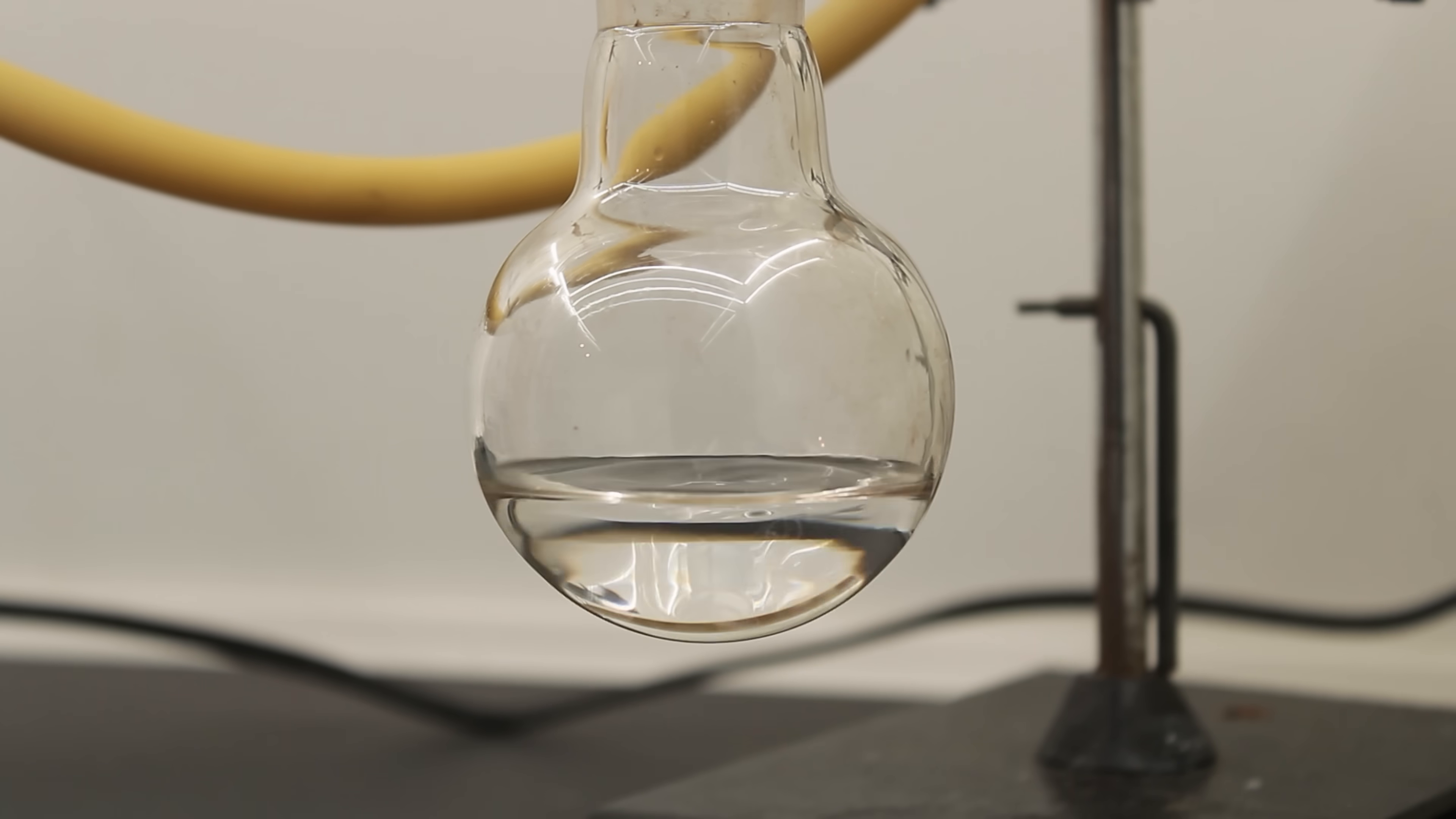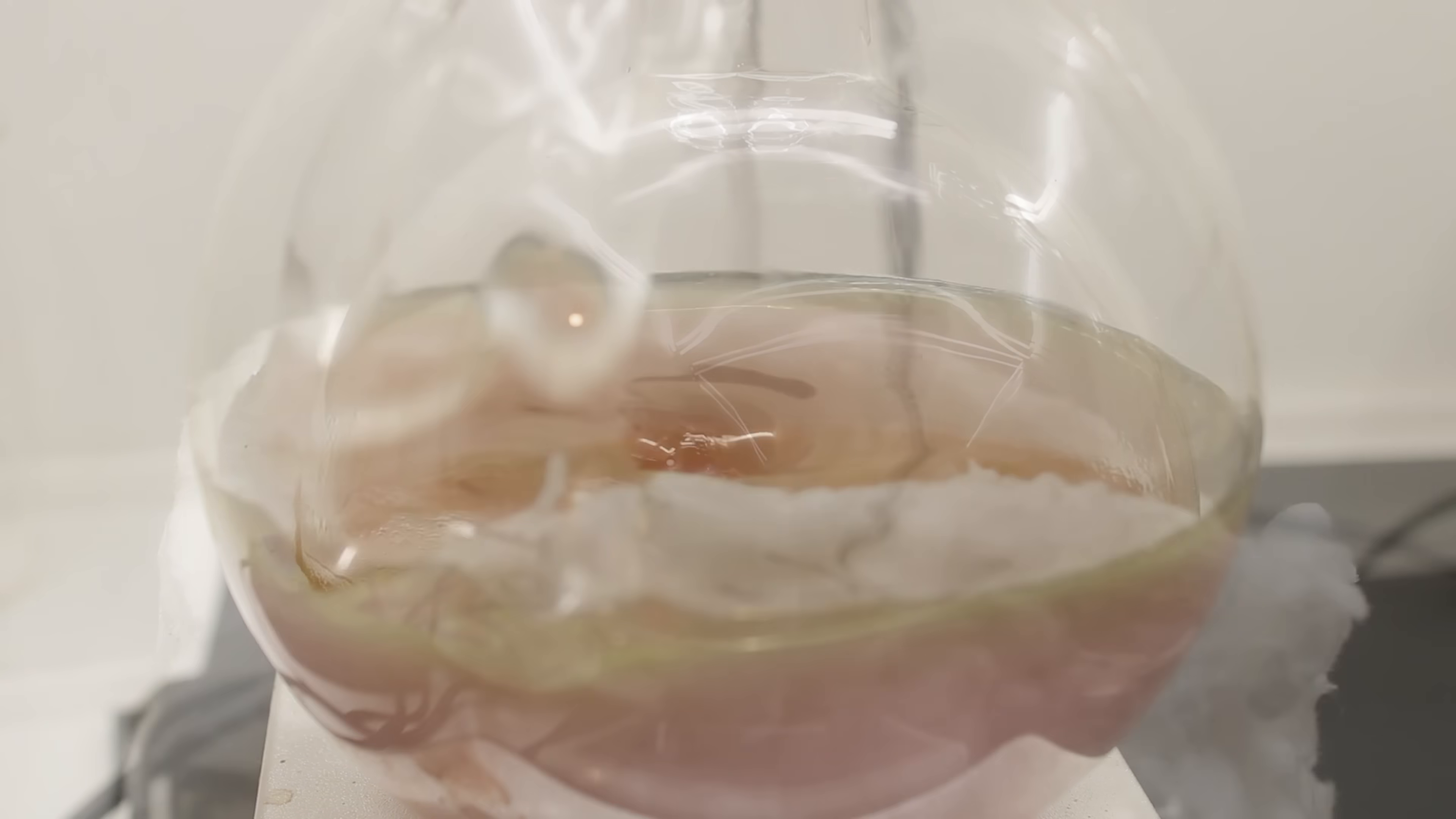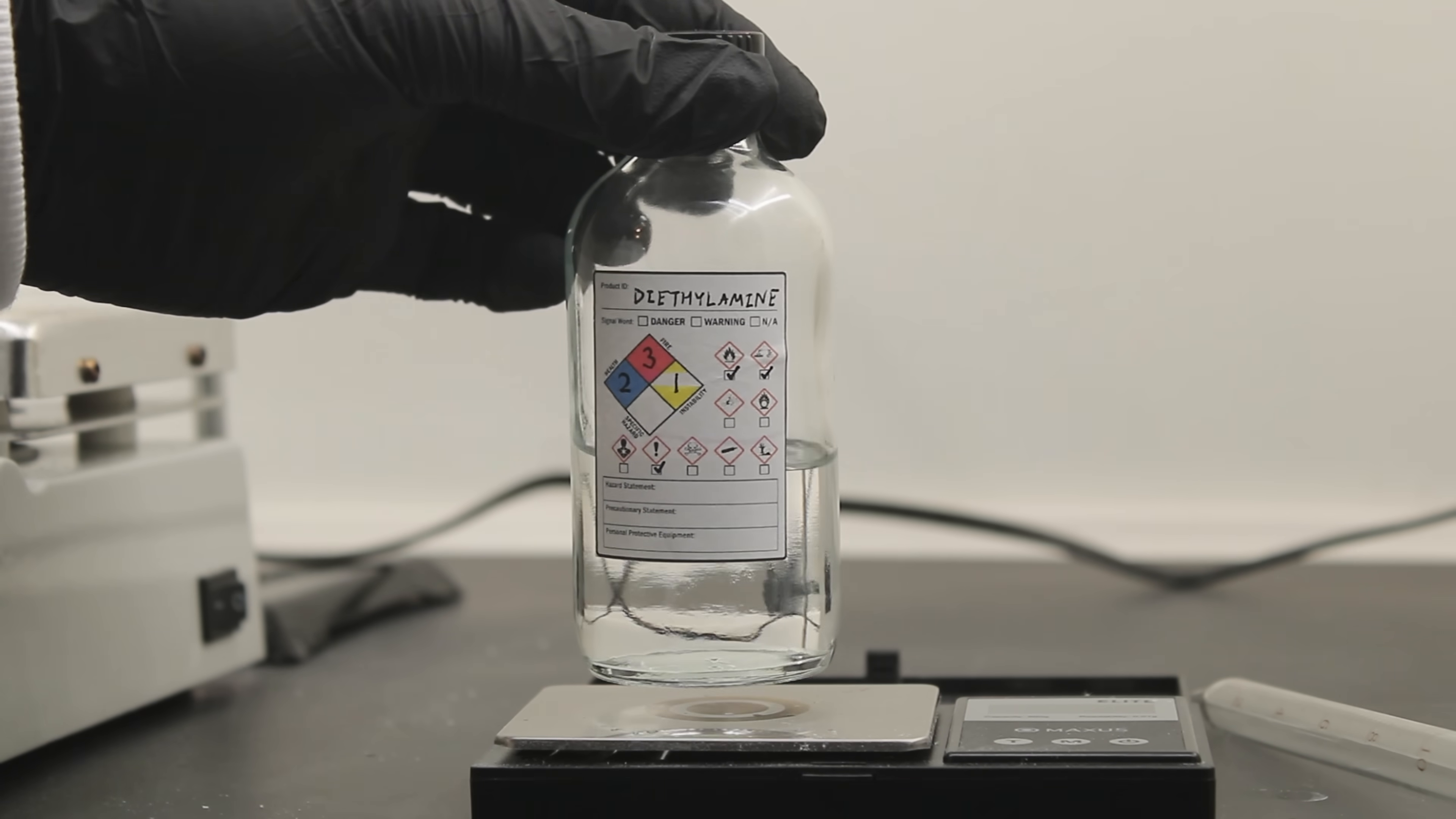The diethylamine was made in a previous video, and it's actually the ingredient that ties bug spray into this whole mess. If you want to know the exact process, I posted the links below, but essentially, I just distilled a solution of DEET and sodium hydroxide in ethylene glycol. It was ridiculously easy and super high yielding.